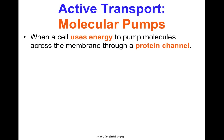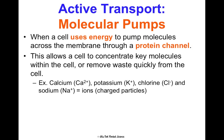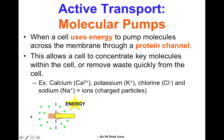First is molecular pumps — when a cell uses energy to pump molecules across the membrane through a protein channel. This allows us to concentrate molecules on one side of the cell to send signals, and to remove waste quickly from a cell. Calcium, potassium, chlorine, and sodium are all ions — they're charged, which means they're polar — so they all travel this way. We move from low to high concentration, requiring energy, and over time the molecules become way more concentrated on one side, which sends whatever signal is needed.